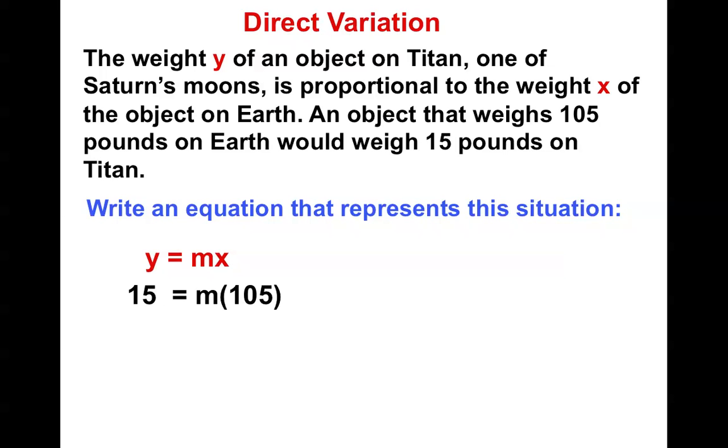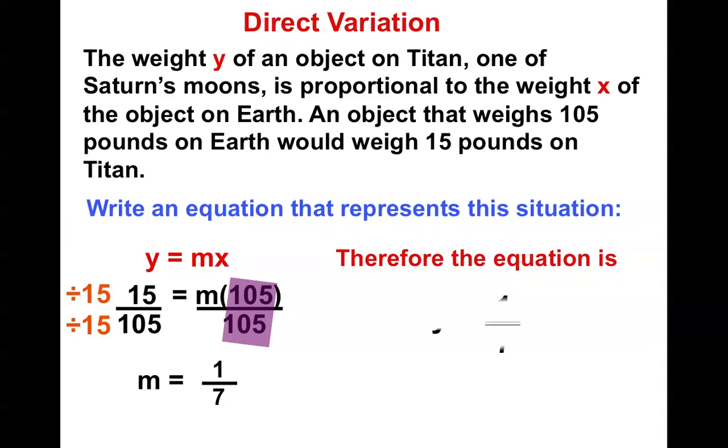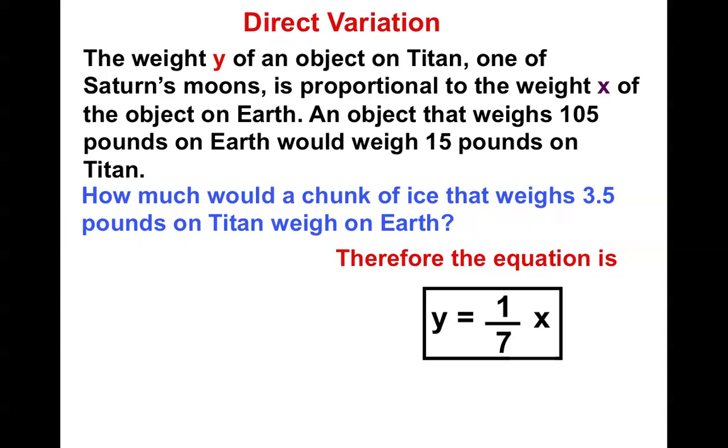Now I can do a simple one-step algebra problem. Divide by 105, divide by 105, simplify, and I get m equals 1 seventh. Now that I know what the slope is, I can make the equation. Therefore, the equation is going to be y equals 1 seventh x. And I can use this equation to predict other things now.